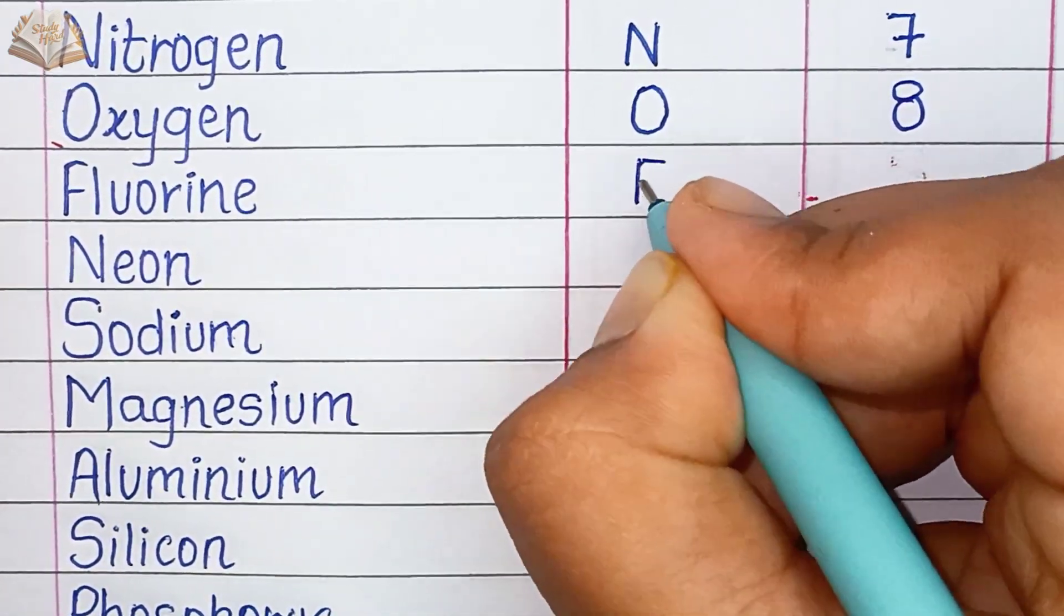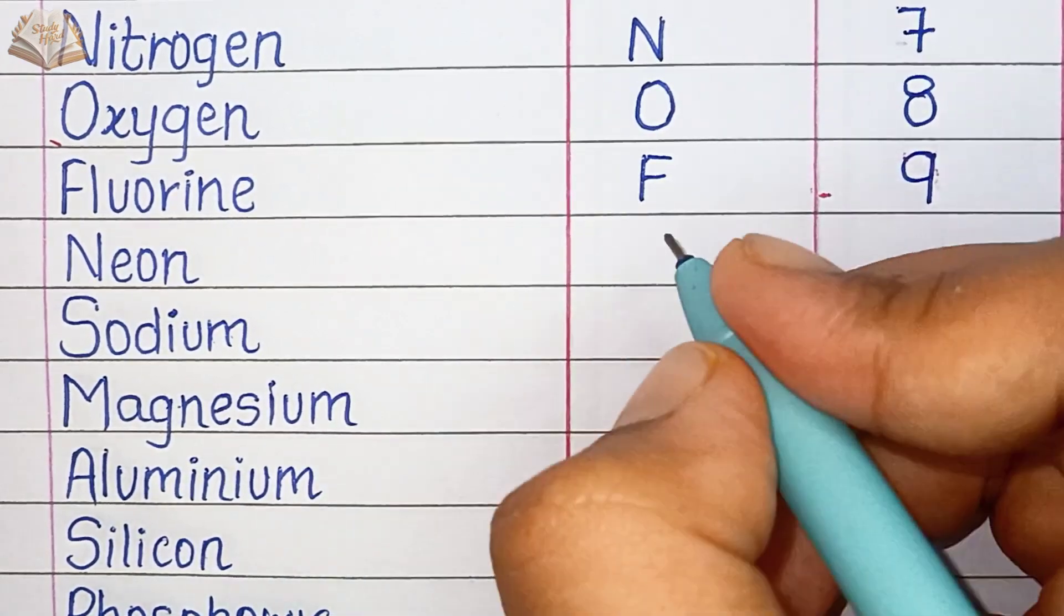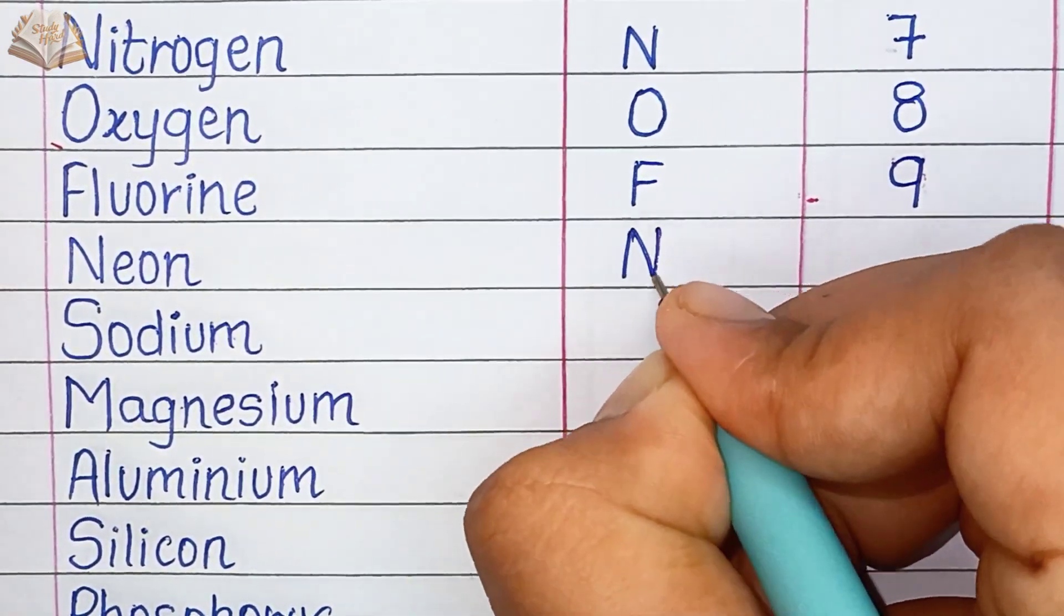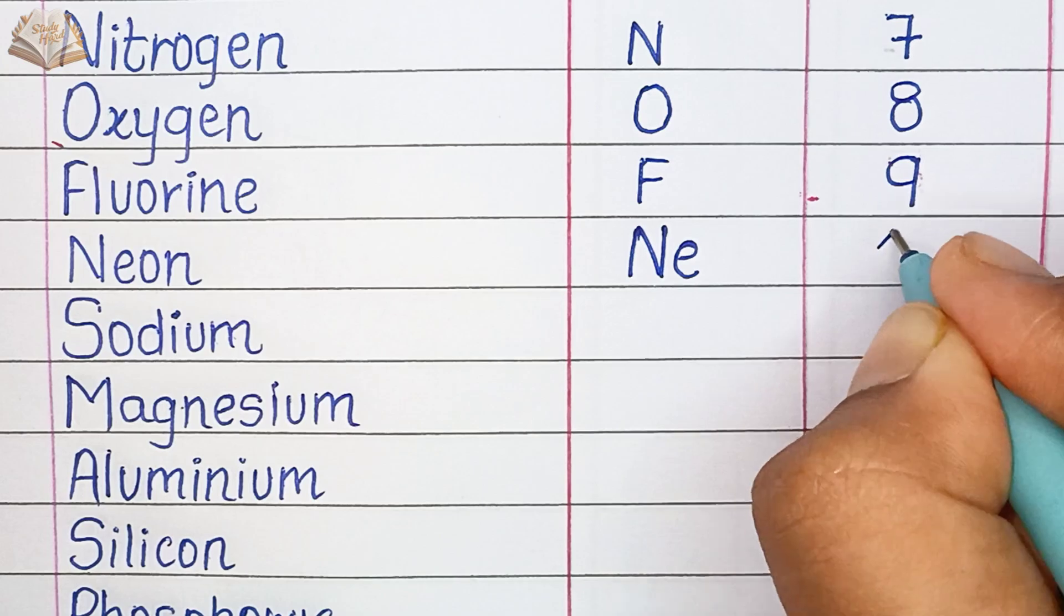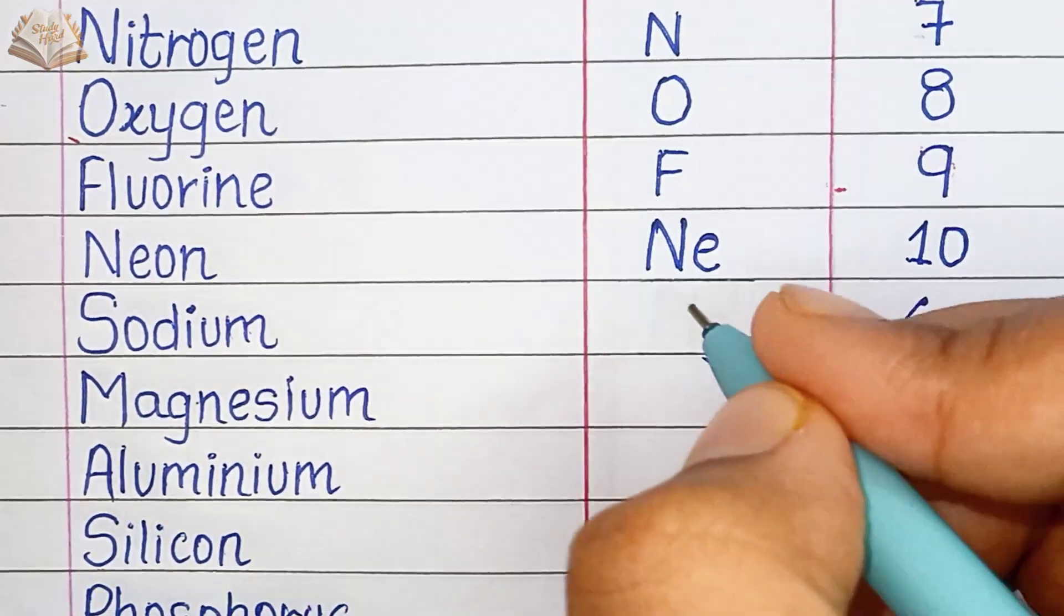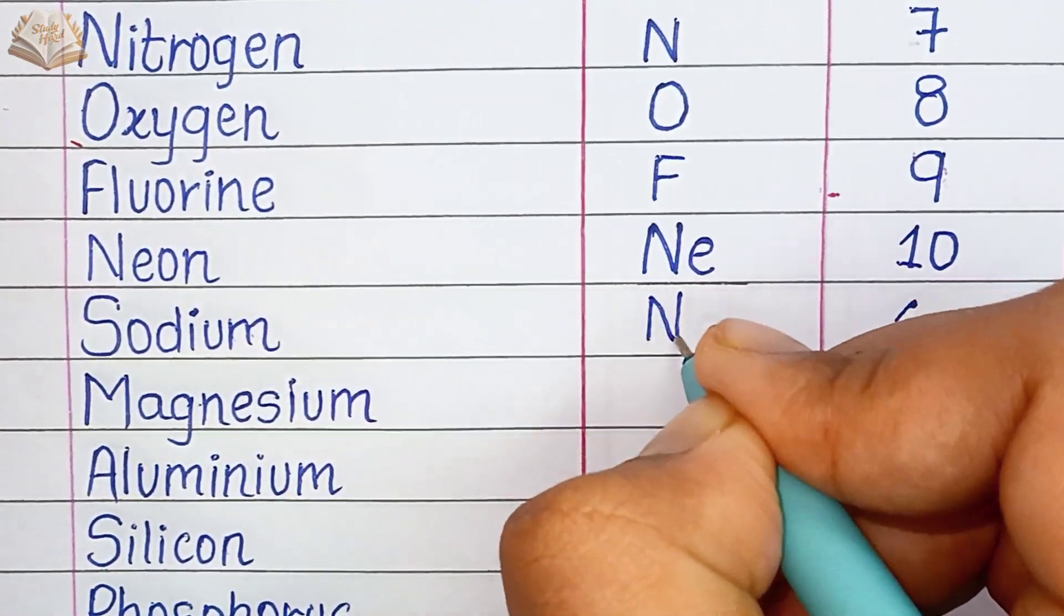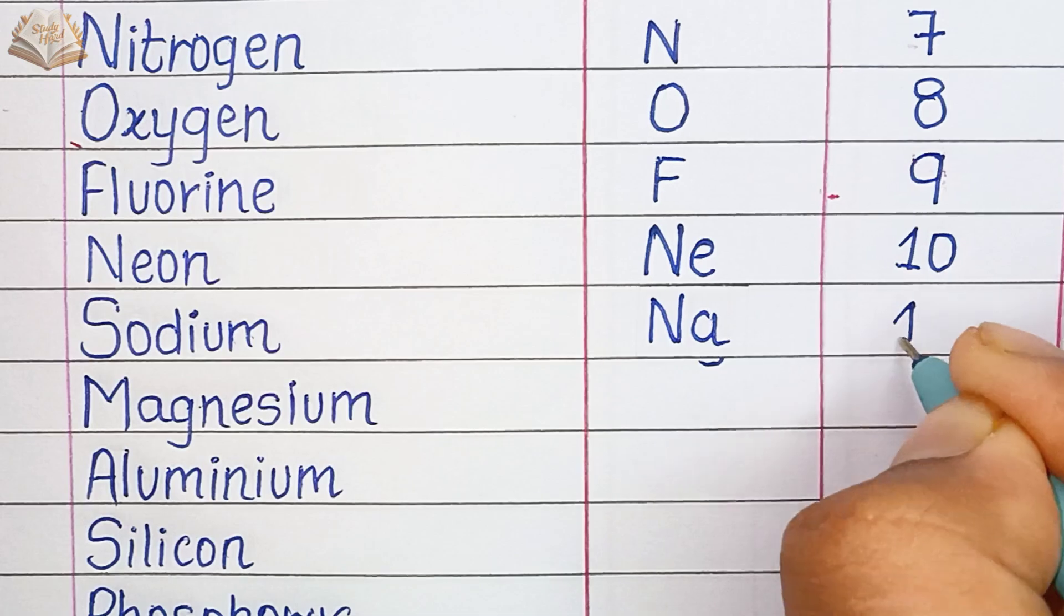Fluorine, symbol F, atomic number 9. Neon, NE, atomic number 10. Sodium, NA, atomic number 11.